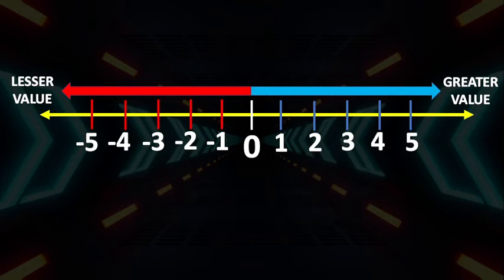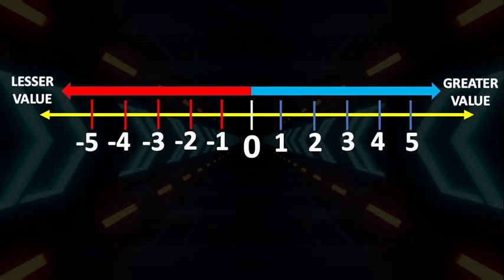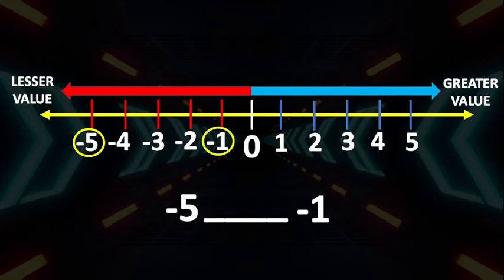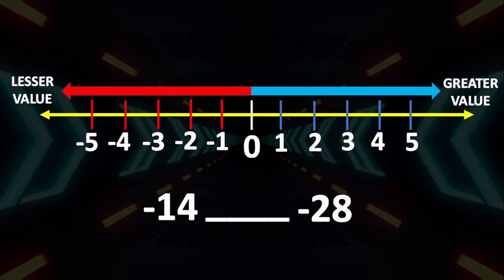How about positive 25 and positive 38? Good job! 25 is less than positive 38. Let's compare negative 5 and negative 1. It seems that negative 5 is bigger than negative 1. However, since we are comparing negative integers, the bigger the number, the lesser its value — which means the smaller the number, the greater its value. Therefore, negative 5 is less than negative 1. How about negative 14 and negative 28? Good job! Negative 14 is greater than negative 28.